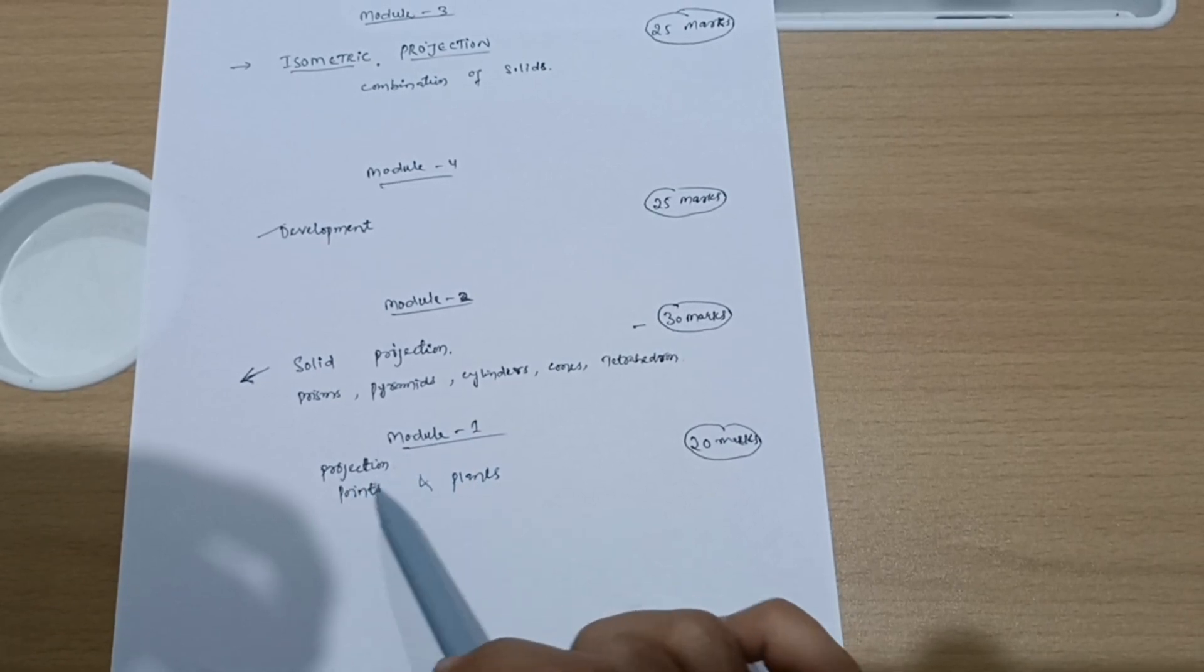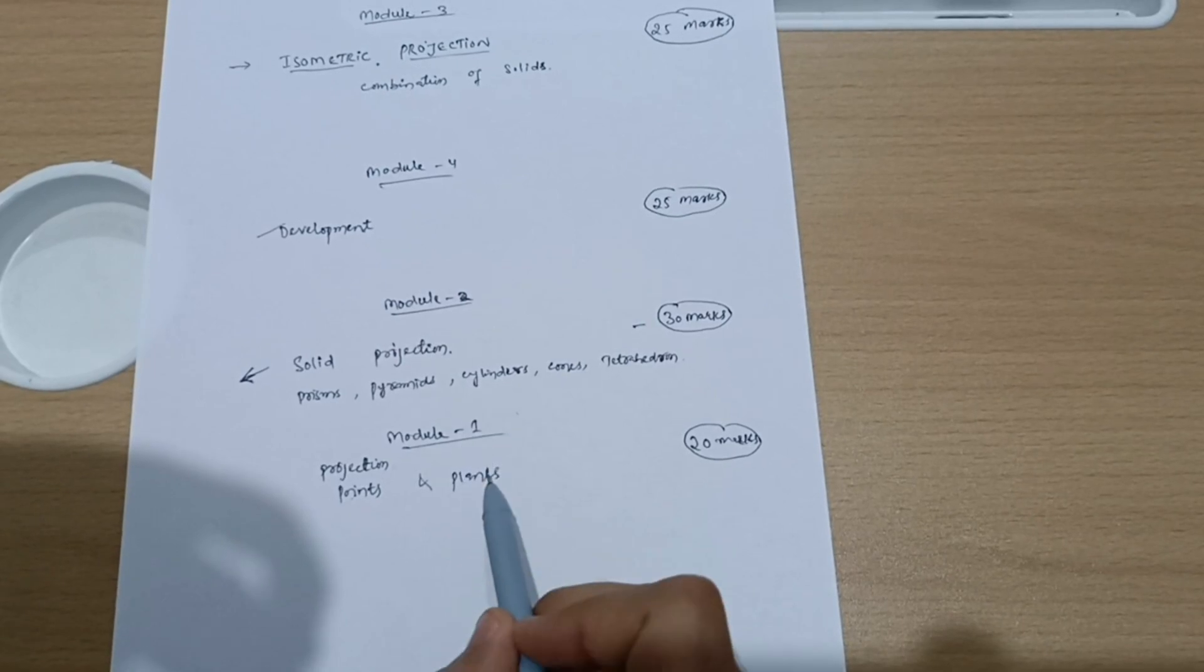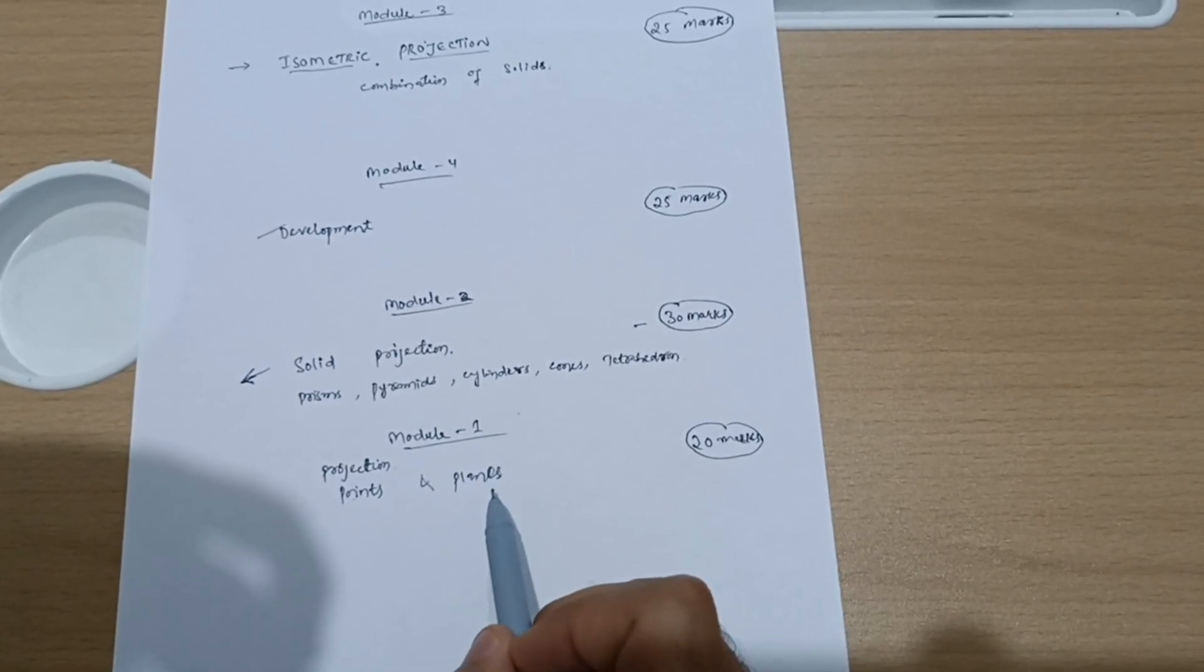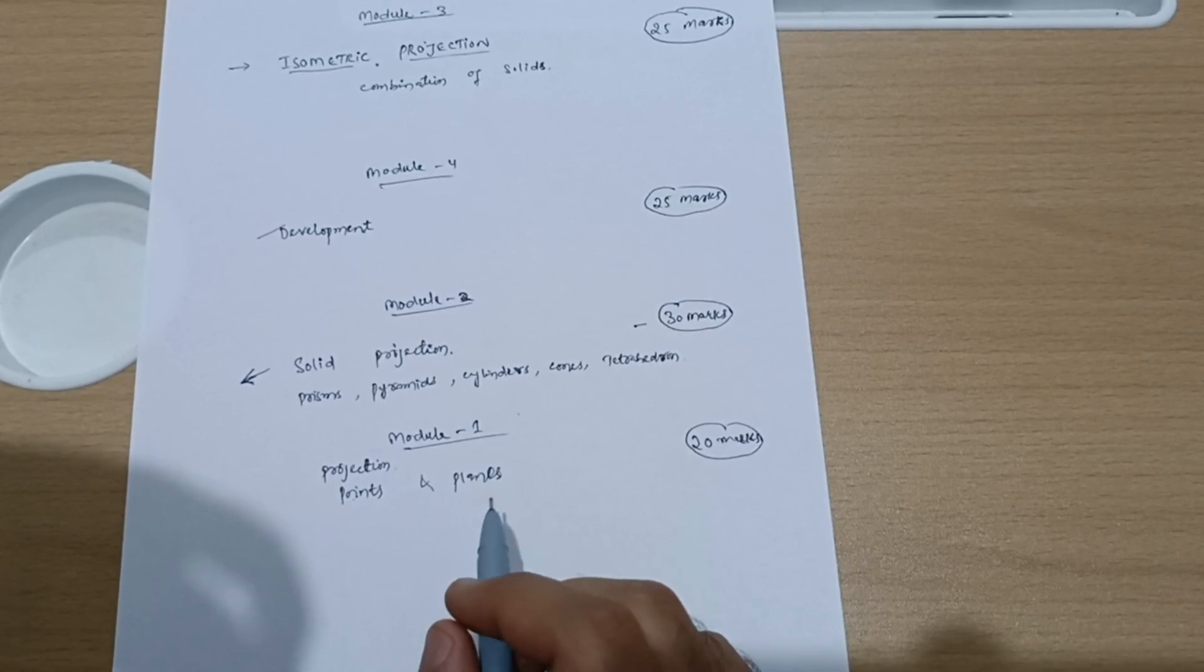If they are good in the projection of points and plans, and the basic is - if you have clear vision on points, you can easily solve other varieties of projections like plans, solid, development, and isometric projection. So point is the base.